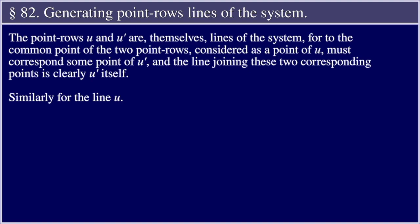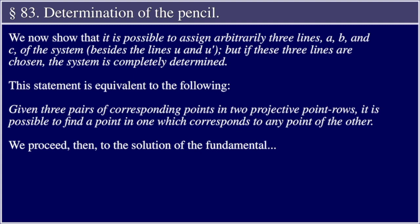Section 82: The point rows u and u' are themselves lines of the system, for to the common point of the two point rows, considered as a point of u, must correspond some point of u', and the line joining these two corresponding points is clearly u' itself. Similarly for the line u.